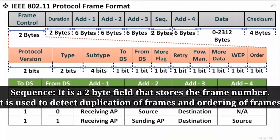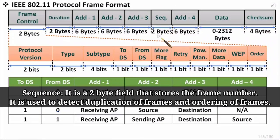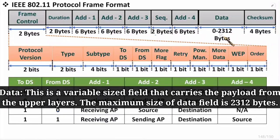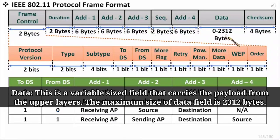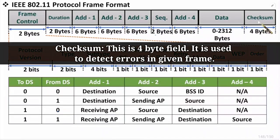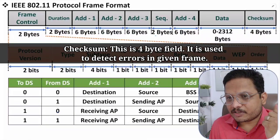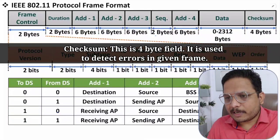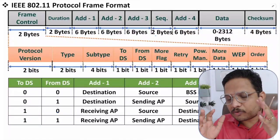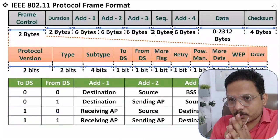The sequence field (2 bytes) holds the sequence number of the frame, used to avoid duplicate frames and ensure in-order reception. The data field can be 0 to 2312 bytes. Finally, a 4-byte checksum field is used for error detection. That is the complete Wi-Fi frame format. If you have any questions, please leave them in the comment section — thank you for watching.